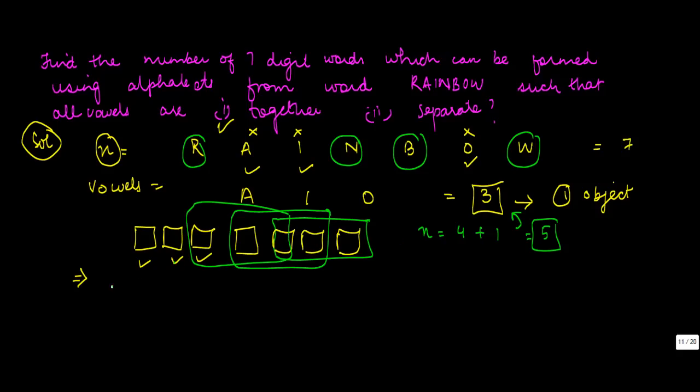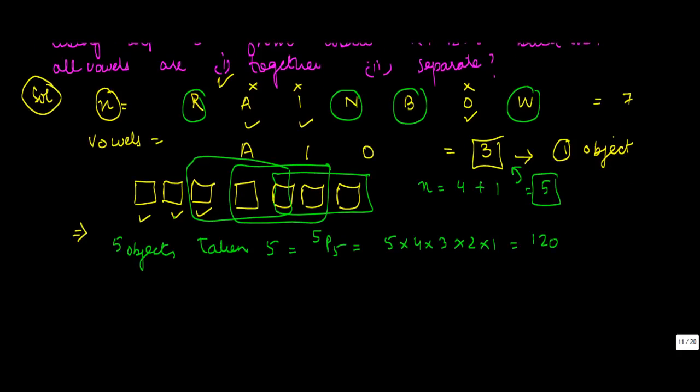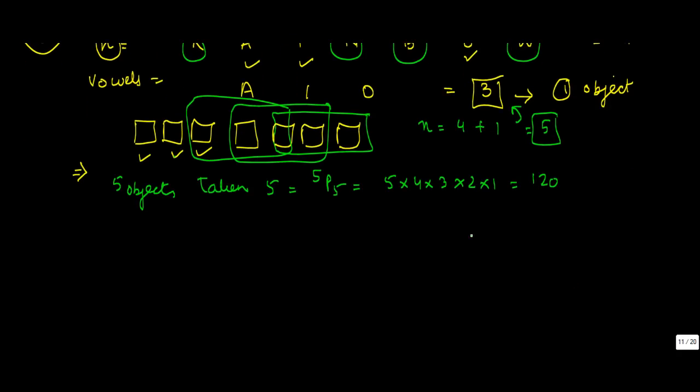So the total number of permutations of five objects taken five at a time is 5P5, which equals 5 × 4 × 3 × 2 × 1 = 120.